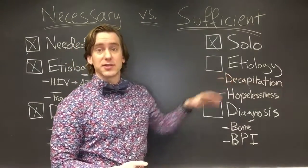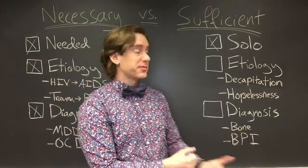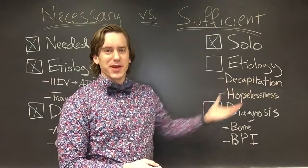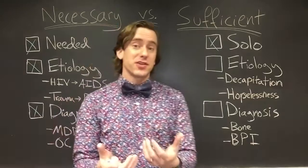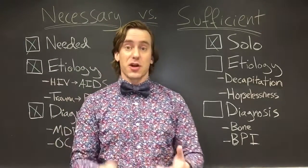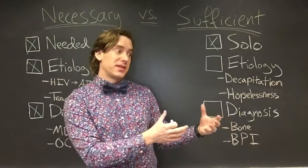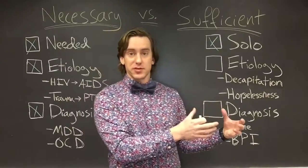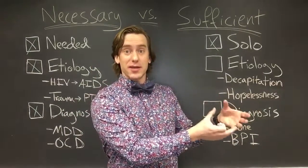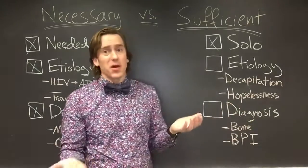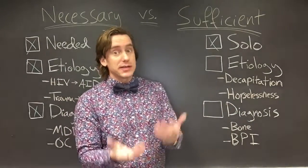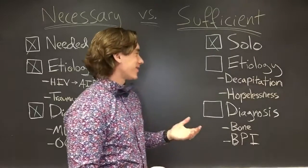In terms of etiology — the cause of problems — decapitation is a great example. Decapitation, to have one's head cut off, is a sufficient cause for death. So if death is the outcome of interest, having your head cut off is a sufficient way to reach that outcome. It's not the only way that people die, but it sufficiently does kill someone.